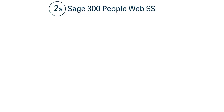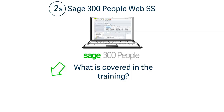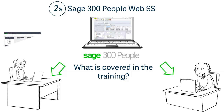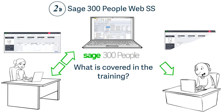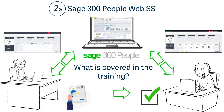The Sage 300 People Web SS training course covers the full Web SS setup within the Sage 300 People system. This includes setting up new Web SS processes, approvers, and users. We also show you how to use all the Web SS functionalities — from applying for leave, submitting personal detail changes and claims, approving submitted items, and impersonating employees. The course also gives an overview of how the items submitted through Web SS influence the Sage 300 People system.